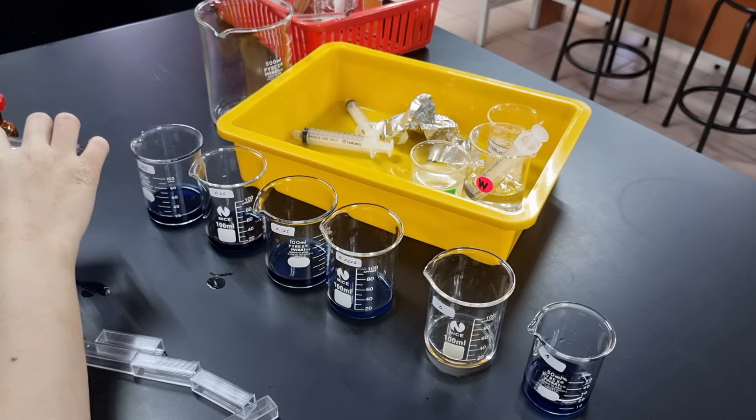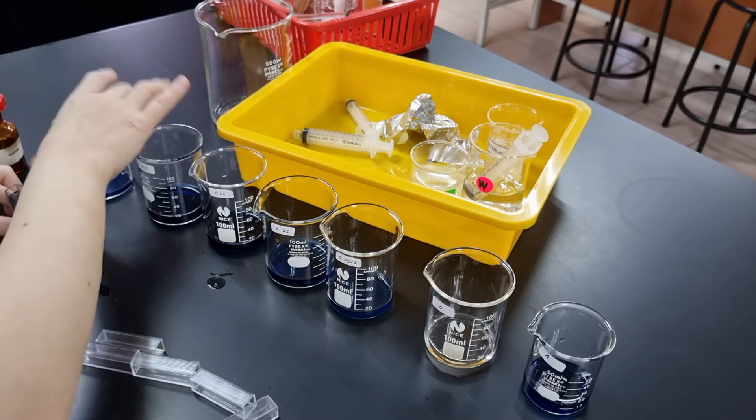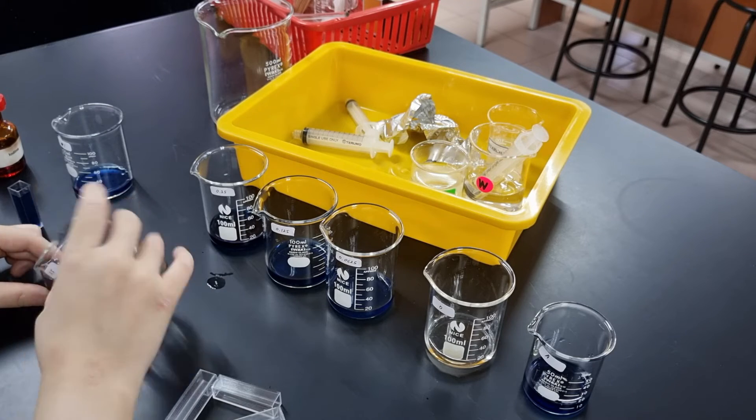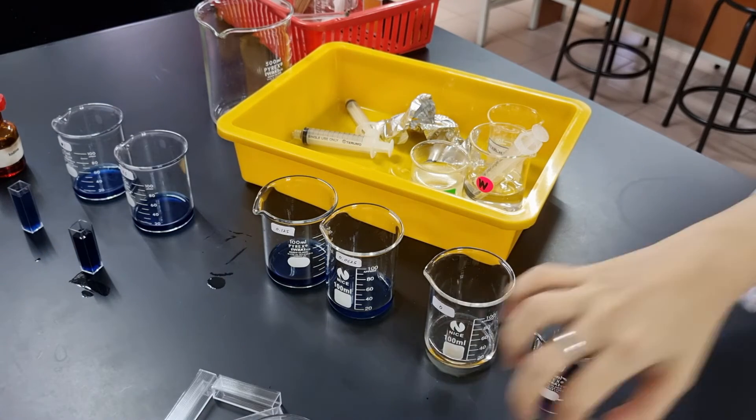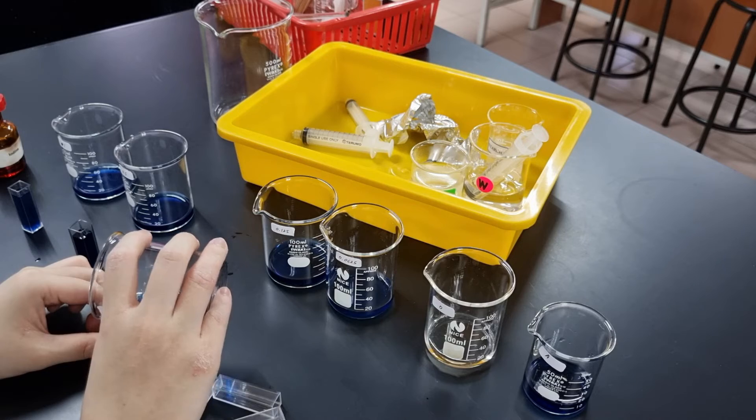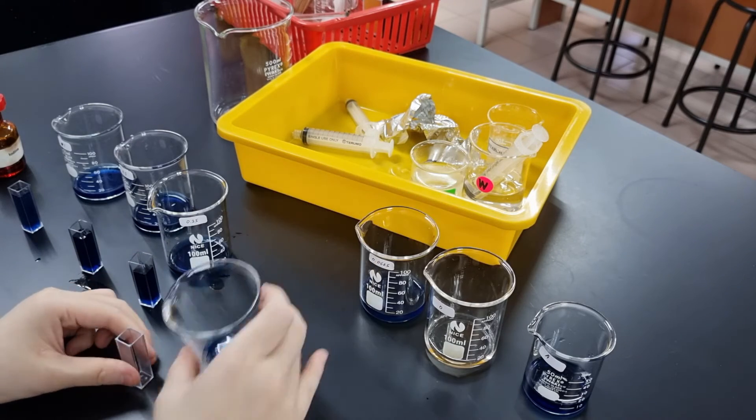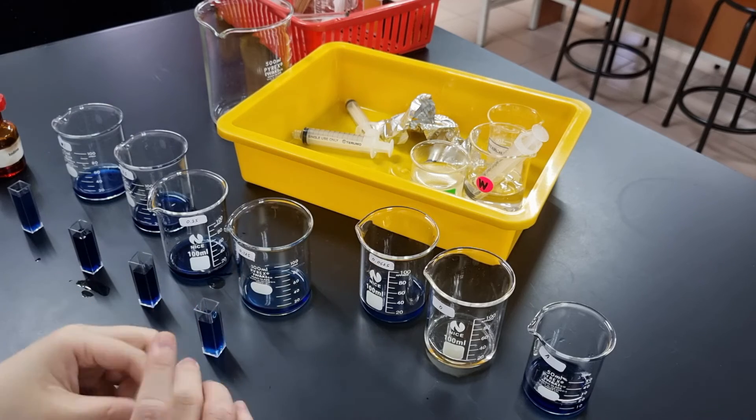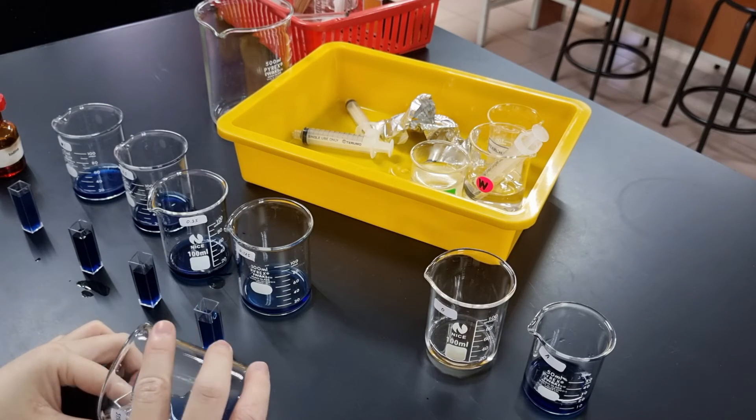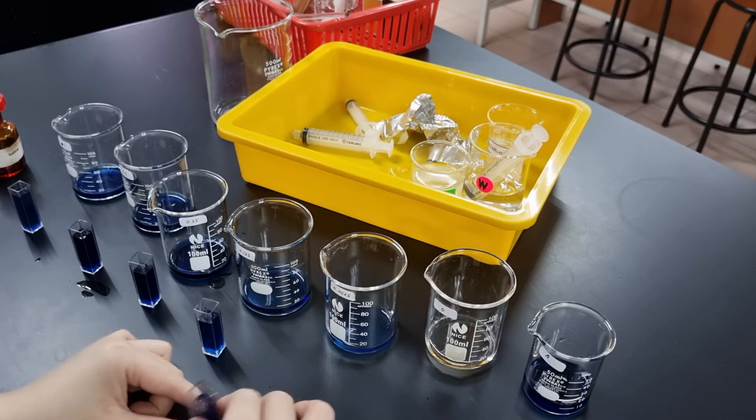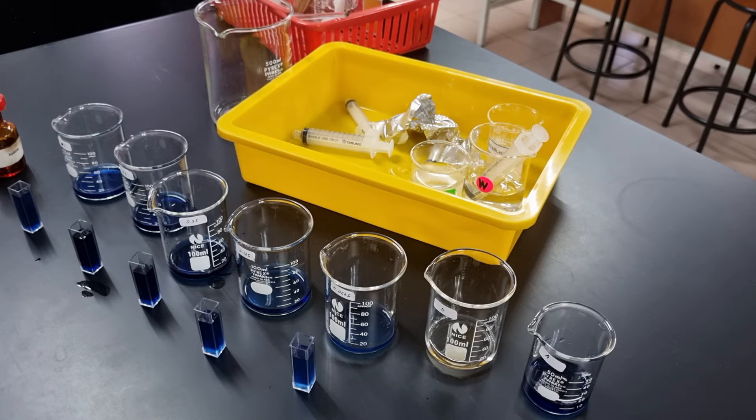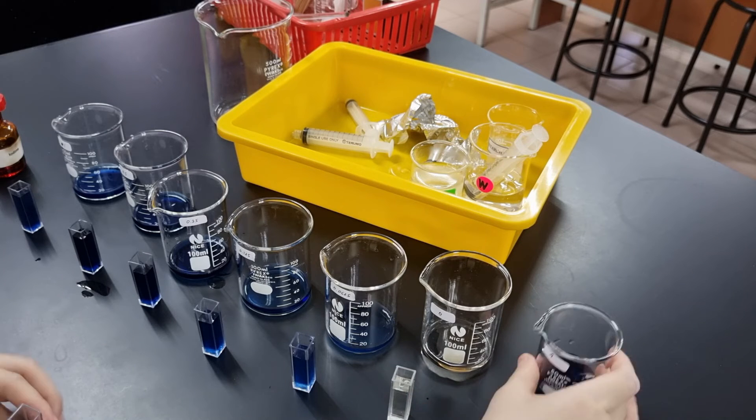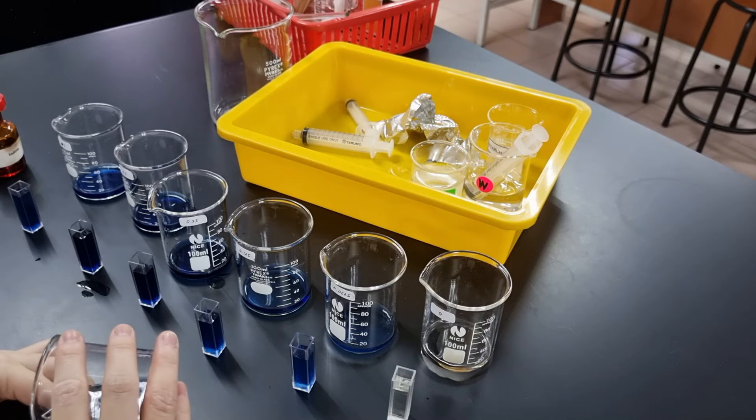This is me then transferring the liquid into cuvettes, which we'll be using later in the spectrophotometer, and this is just because it's easier to see the color and the intensity through the cuvette. 0% is just distilled water and some iodine, so it will be a little bit yellow. And that's our results.